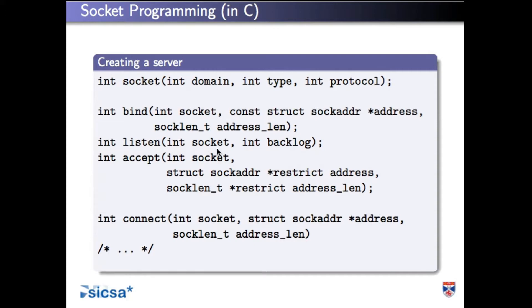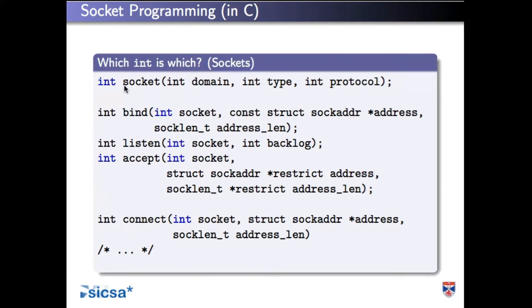I'm going to highlight the things that are sockets in blue. This is returning a socket, this is passing in the socket we're working with, and we're listening for a connection on that socket. Because I've coloured these in blue, it's now clear there are two sockets involved: the socket we're working with and the socket we've created. And then the things I didn't colour blue — those are potential errors, which I've coloured red. Just to keep things entertaining, some of them are both red and blue.